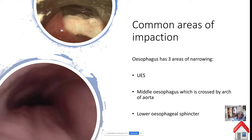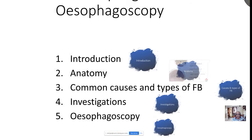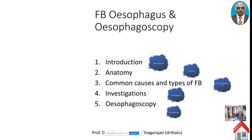If you want to include the hypopharynx area, the pyriform fossa is the common area where foreign bodies can be intentionally or unintentionally lodged. Intentional cases occur in prisoners and smugglers who hide contraband in the pyriform fossa by pushing an object with the index finger.